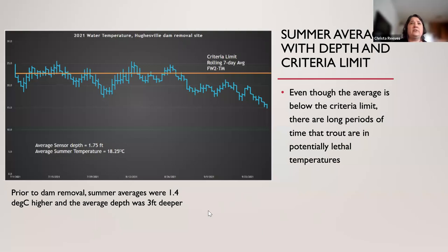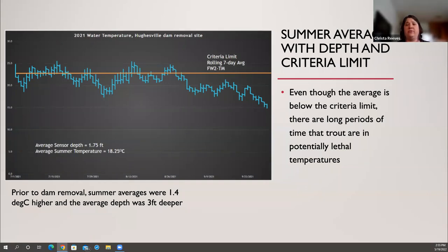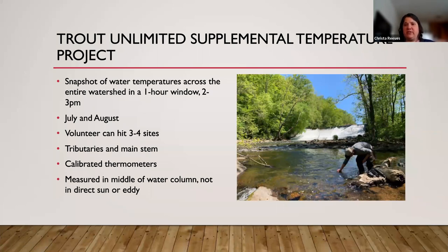Prior to the dam removal, I looked at data collected by my predecessor Nancy Waller using hobos. Summer averages were 1.4 degrees C higher than the average post-removal, and the average depth was even deeper — 3 feet back then compared to 1.75 feet now — almost double the depth but 1.4 degrees higher. Keith Fritchie with Trout Unlimited came up with a project that MWA and Trout Unlimited could work on to supplement the continuous sensor stations — a synoptic look at what's going on not just continuously in one spot, but across an entire watershed.